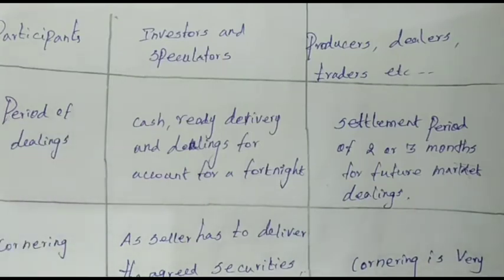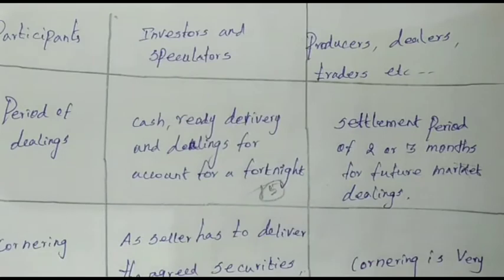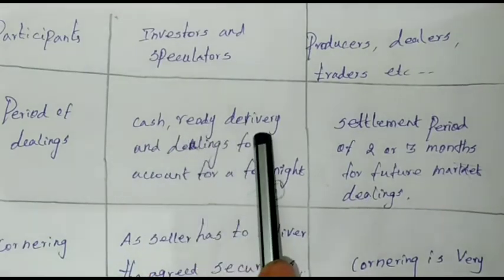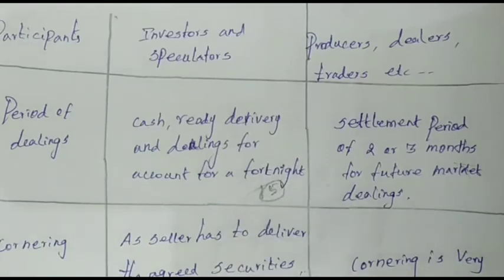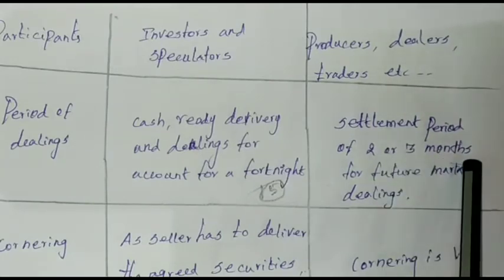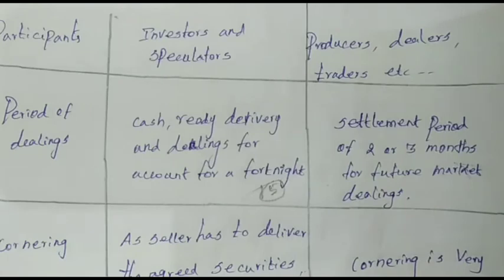For stock exchange, dealings include cash, ready delivery, and dealing for account for a fortnight — 15 days. Within 15 days you can get the settlement amount from investors, for example 50 lakhs. For commodity exchange, the settlement period is 2 or 3 months for the futures market. You have to wait 2 or 3 months to get payment from sellers or buyers.